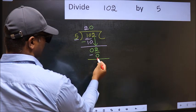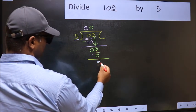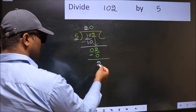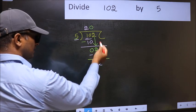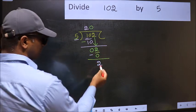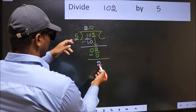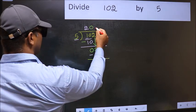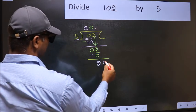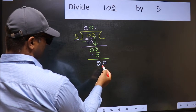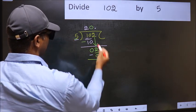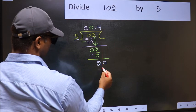Now you should subtract. 2 minus 0, 2. Over here, we did not bring any number down, and 2 is smaller than 5. So now you can put dot and take 0. So, 20. When do we get 20 in five table? 5 times 4, 20.